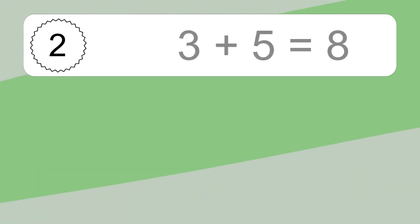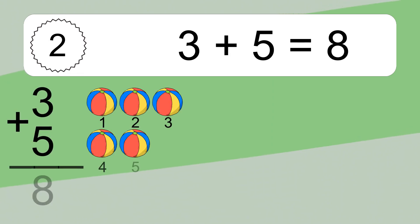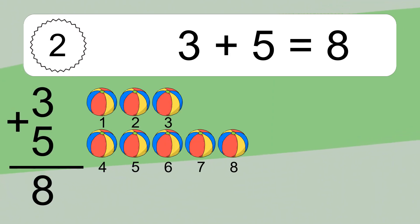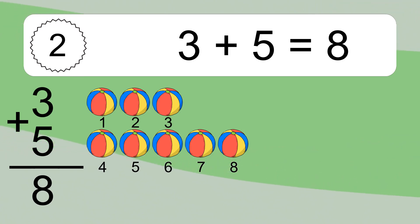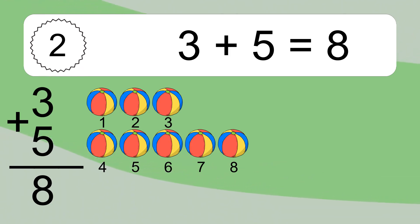3 plus 5 equals 8. Let's count it: 1, 2, 3, 4, 5, 6, 7, 8.